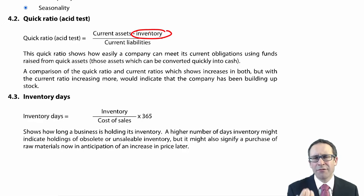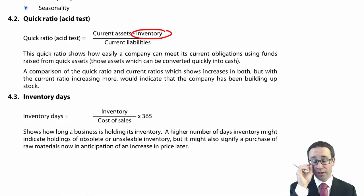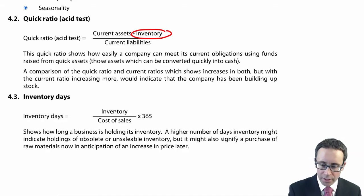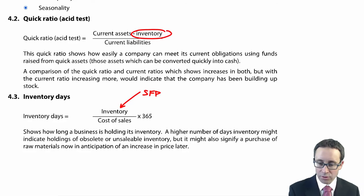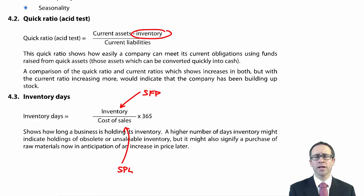We then measure specific working capital balances, looking more at how efficiently you use your inventory, receivables, and payables. We look at the number of days it takes to get inventory off the shelves. We take the inventory figure from the statement of financial position, divide it by cost of sales — expressing inventory as a proportion of total annual cost of sales — and then multiply by 365 days.